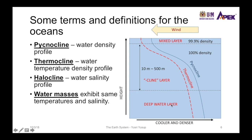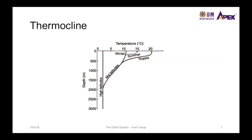Below the thermocline layer is the deep water layer where temperature and density remain relatively constant. A thermocline profile at different latitudes shows that in the tropics the thermocline is steeper, meaning temperature varies with depth at a faster rate compared to higher latitudes. Seasons also change the temperature profile, but at about 500 meters below the surface the profiles converge, and deeper still the temperature remains at a cold one to two degrees Celsius.